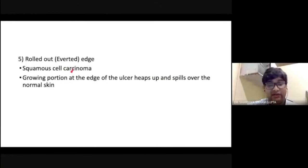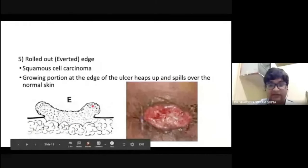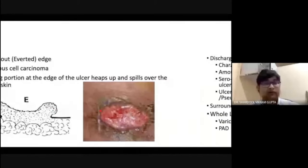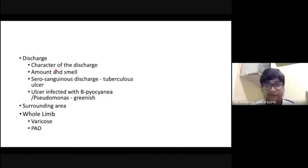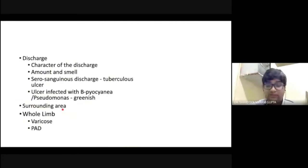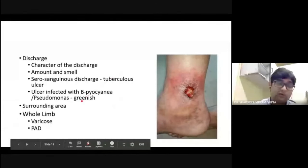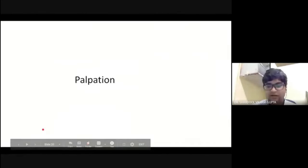The everted edge is seen in squamous cell carcinoma — the growing portion of the edge heaps up and spills over the normal tissue, unlike the raised edge which stays confined. Once you have determined the margin and the edge, you will inspect for any discharge — the character, amount, and smell, whether it is foul smelling or not. Serosanguinous discharge is usually seen in tubercular ulcers. Ulcers infected with Pseudomonas will be greenish in color. Inspect the surrounding area for redness, lipodermatosclerosis, or pigmentation.